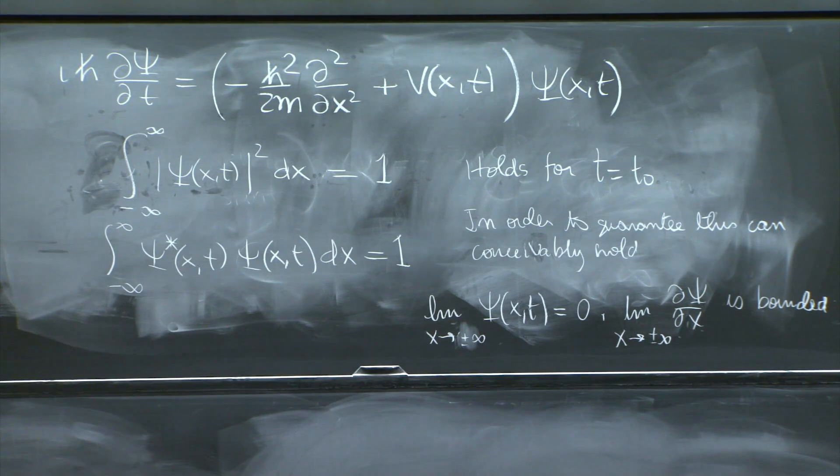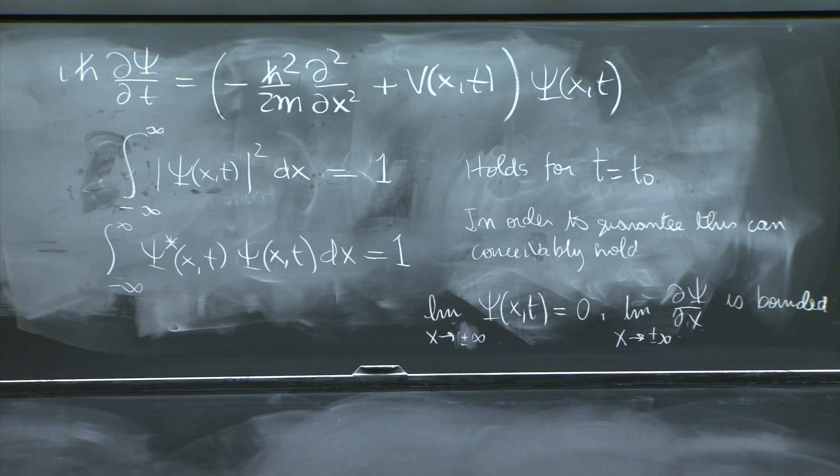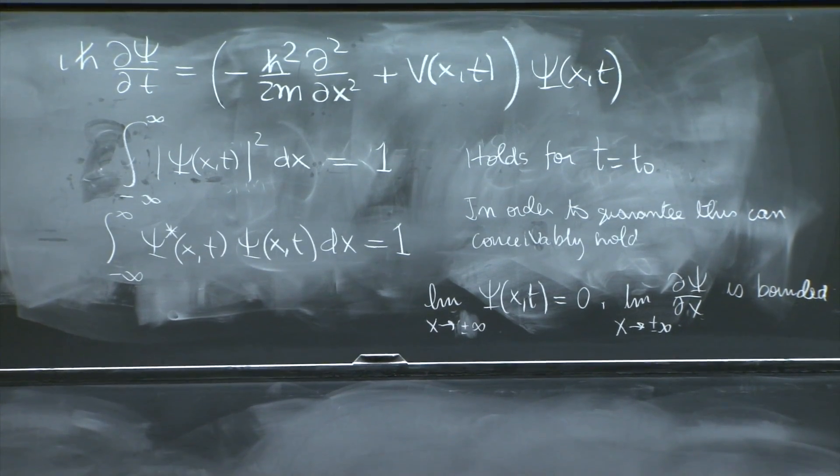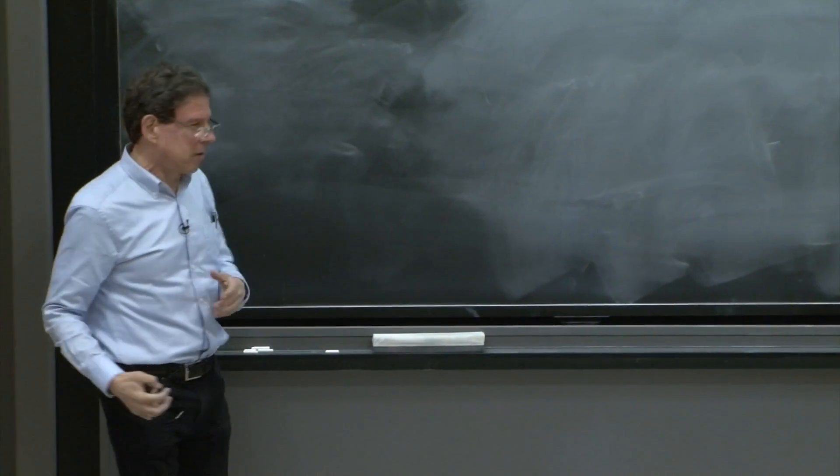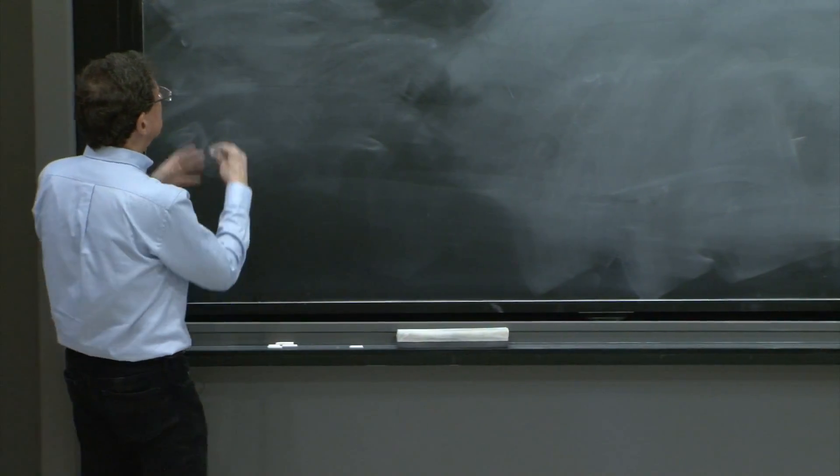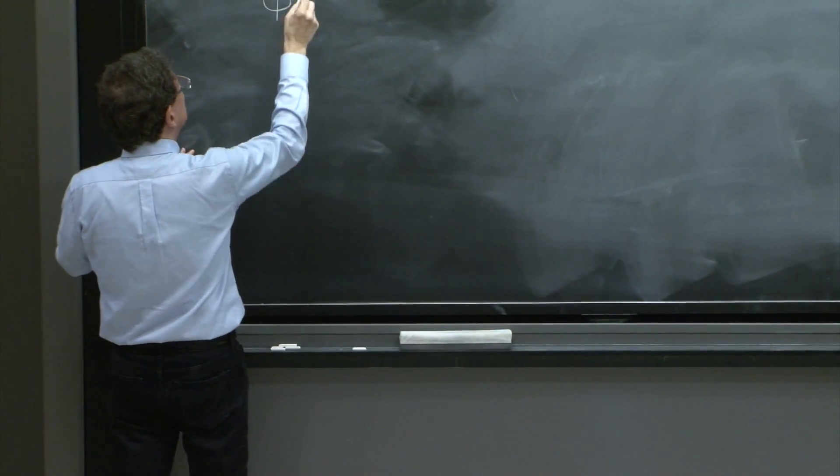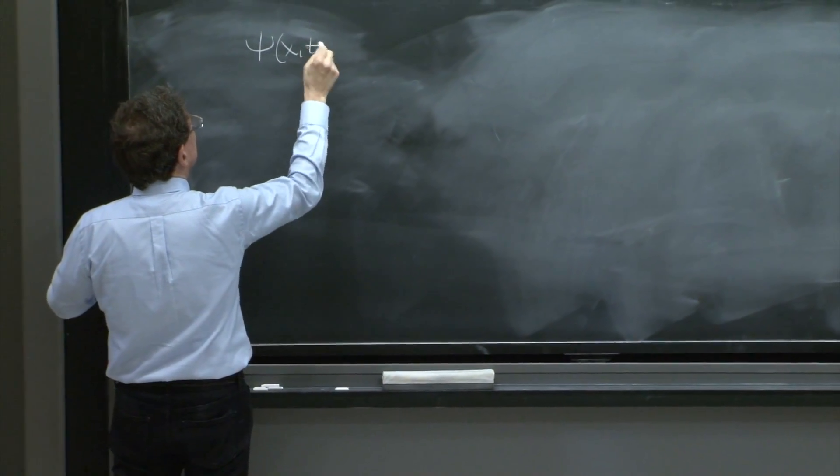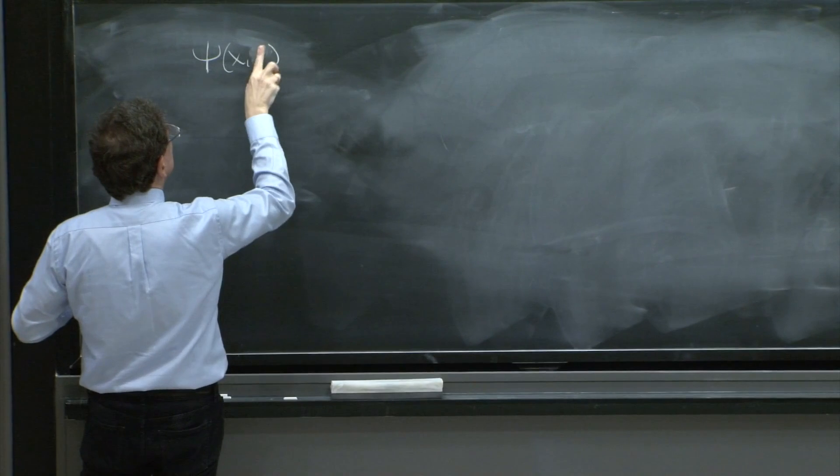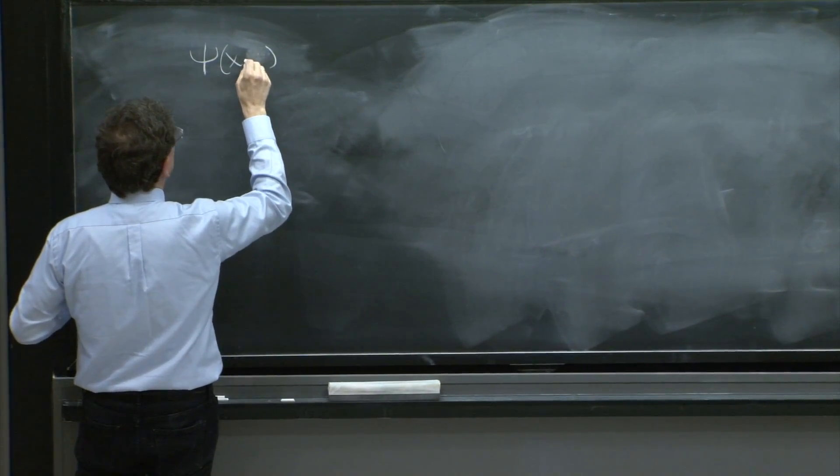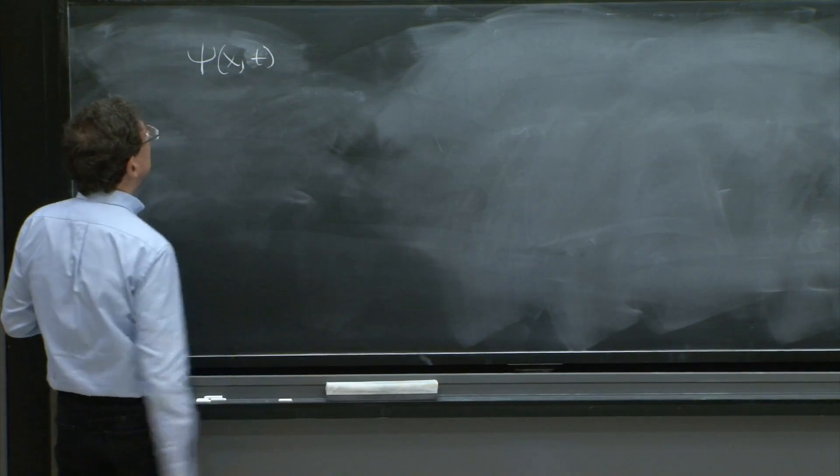Here, this wave function has been normalized. So there's two kinds of wave functions that you can have: wave functions that can be normalized, and wave functions that cannot be normalized. Suppose somebody comes to you and gives you a psi of x and t.